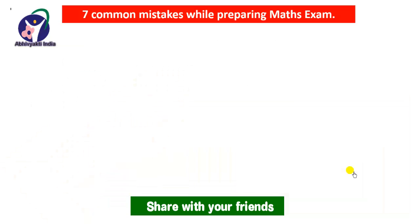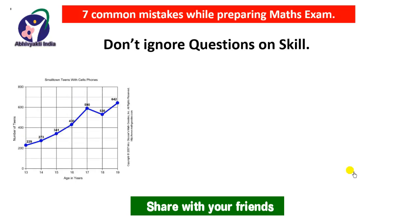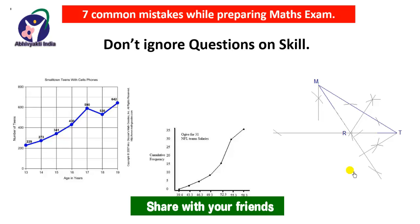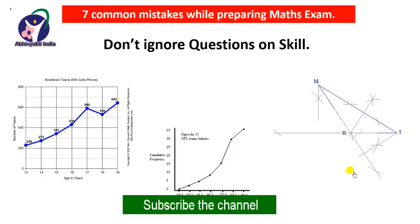The fifth tip is do not ignore questions on skill. Questions asked on graphs, constructions, etc. are skill-based. Your skill is tested—the cleanliness, neatness, sharpness, and how you use the pencil, compass, and rubber. It is very necessary that you solve questions which are based on skill regularly so that you achieve cleanliness, neatness, and sharpness while drawing graphs, constructing triangles, or drawing figures. Once you achieve that skill, it is very easy to achieve full marks in such questions.